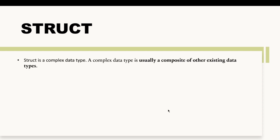In this video we are going to talk about the struct data type in Solidity. A struct data type is a complex data type, and a complex data type is a composite of other existing data types. The data types we have seen so far were simple — for example, uint can only store uint elements, and arrays can only store homogeneous elements.